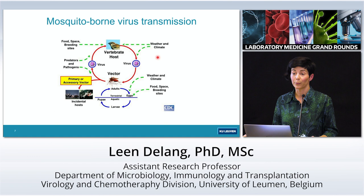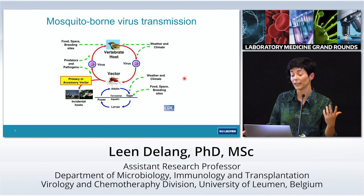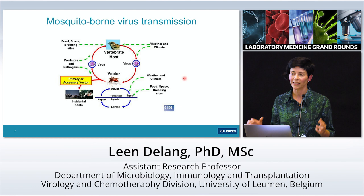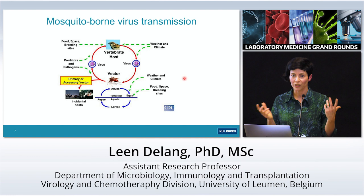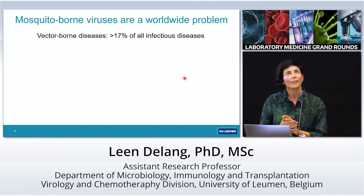For example, weather and climate are really important, especially for the mosquitoes, because they will influence how many mosquitoes will be alive at a certain moment in time, and this affects transmission. It's actually a complicated process, which makes it difficult to predict how much transmission there will be at a certain moment in a certain location.